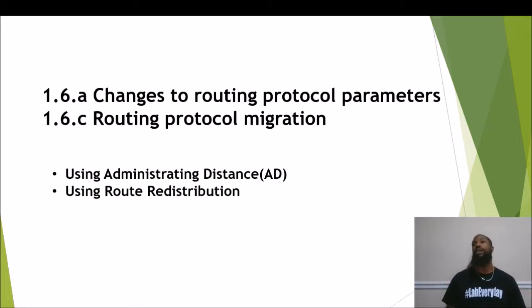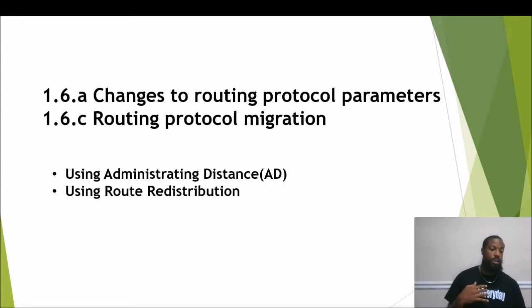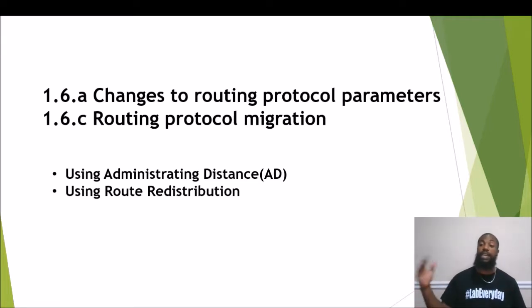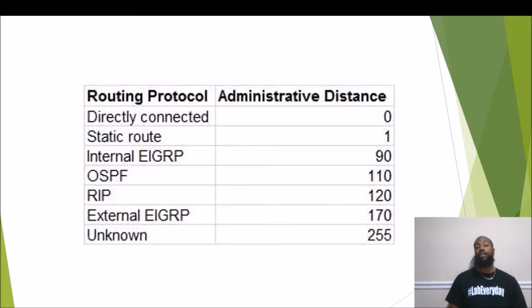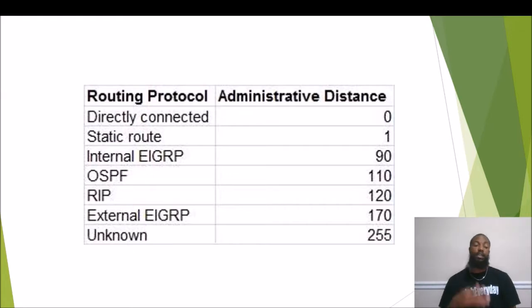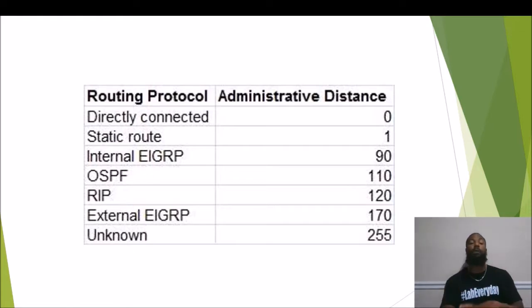Administrative distance is basically the trustworthiness of a specific route — the lower the AD, the more trustworthy the route; the higher it is, the less you want to trust it. Here are the most common AD values: OSPF is 110, EIGRP is 90, and so on. This chart shows the most common ones you need to memorize and should know by now.